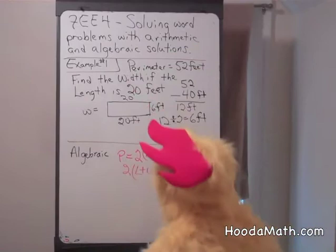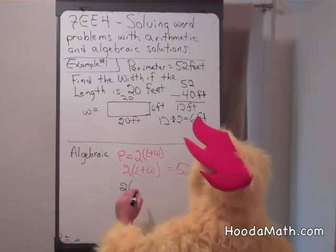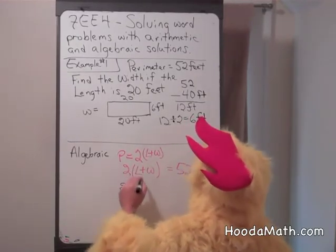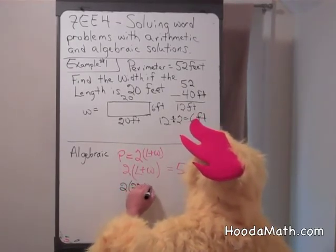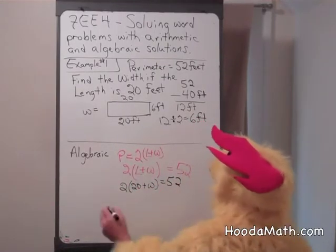So what we can do is substitute the length for L being 20, 20 for L, plus W is going to equal 52. Now,